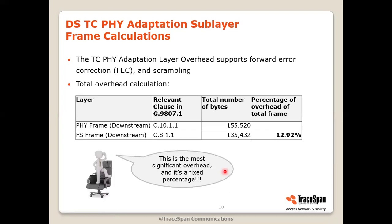Now let's give you some benchmarking numbers. Let's look at each of the layers individually. First, the PHY frame and the FS frame — these are two different layers, the lowest layer and the layer above. If you look at the downstream and calculate the ratio of bytes between the two layers, you'll find an overhead of about 12.92%. This accounts for forward error correction and scrambling, and is the most significant overhead — it's a fixed percentage. Nothing you can do about it; even if you are using your XGS-PON very efficiently, you'll always have this overhead.